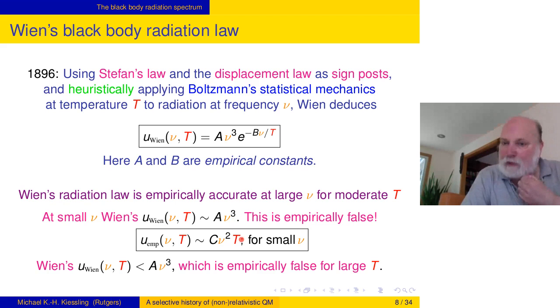It turns out that this is pretty accurate for large frequencies and moderate temperatures. But at small frequencies, it says that this becomes temperature independent, just a third power of frequency. And that is empirically false. Measurements were much closer to the second power of frequency. And moreover, it was temperature dependent. You can see e to negative a positive constant is less than one. So the spectral radiance function is always bounded. And that's also empirically false when you make t larger and larger.